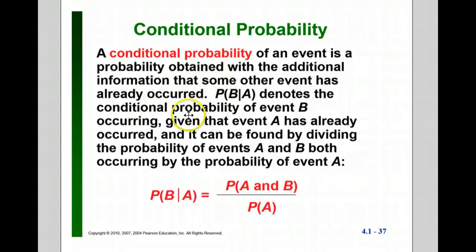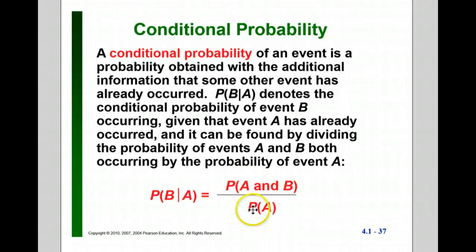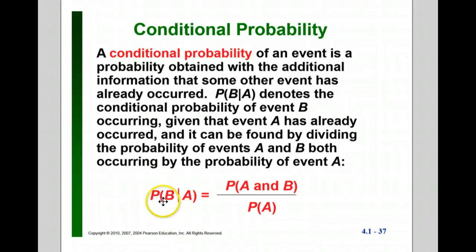The other big thing in this section is conditional probability. The notation is: probability of B given A. That's how we read it. The formula is: the probability of A and B divided by the probability of A. So if you know the probability of both A and B, and you know the probability of event A, you can find the probability of B given A using that formula — or you can just do it intuitively, which is completely fine.